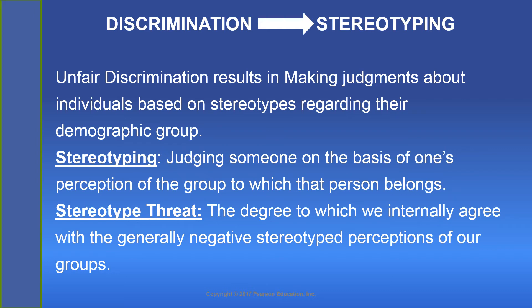Discrimination at the workplace may lead toward stereotyping. Stereotyping refers to judging someone on the basis of one's perception of the group to which that person belongs. Generally, we form stereotypes regarding racial characteristics, cultural characteristics, and on the basis of socio-cultural and socio-economic status, and from the gender basis as well. Stereotype threat refers to the degree to which we entirely agree with generally negative stereotype perceptions of our group. Conclusively, unfair discrimination results in making judgments about individuals based on stereotypes regarding their demographic groups.